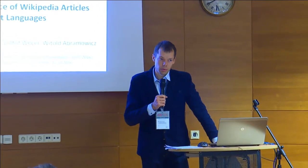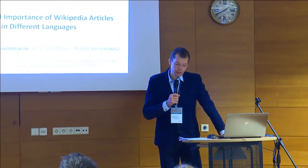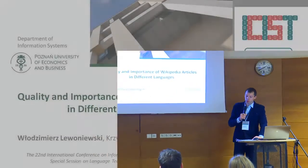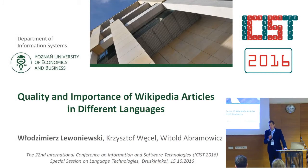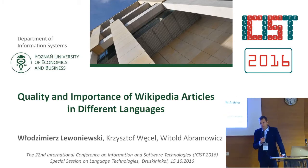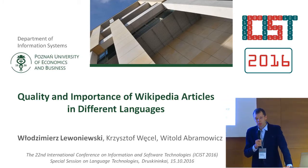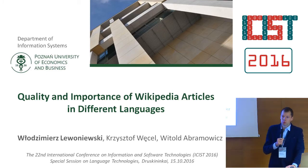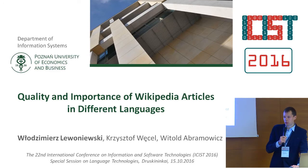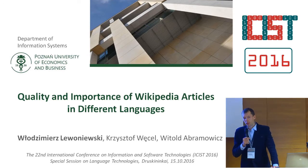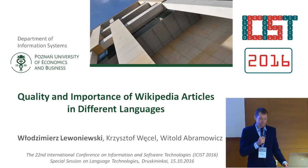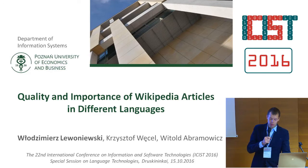This work aims to examine the quality of Wikipedia articles in different languages, and the impact of article importance on quality. Based on analysis of the literature and our own experience, we collected various measures related to article quality that will be used in building models of article importance.